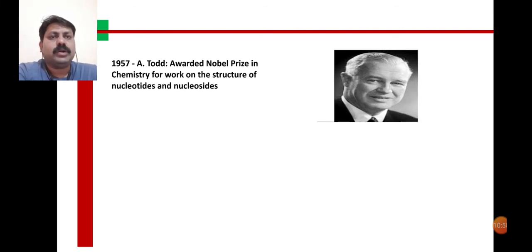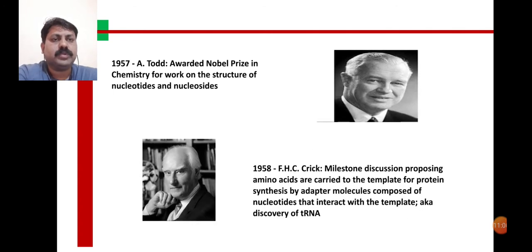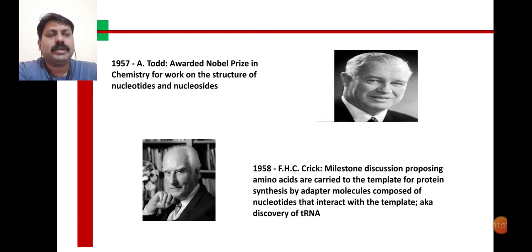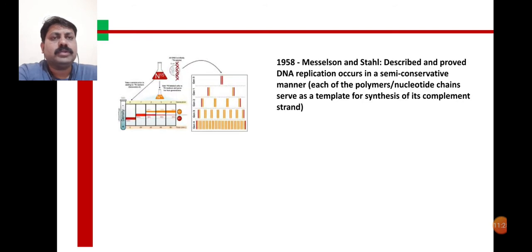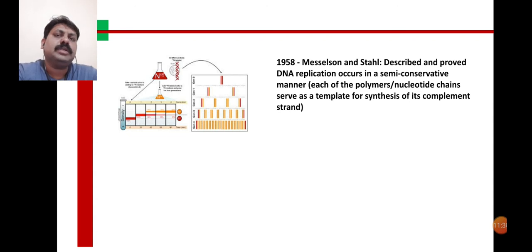In 1957, they proposed the structure of nucleosides and nucleotides — an important contribution. In 1958, Crick proposed the role of tRNA in carrying amino acids to the mRNA strand. Also in 1958, Meselson and Stahl performed an experiment related to DNA replication and proposed that replication is of the semi-conservative type.